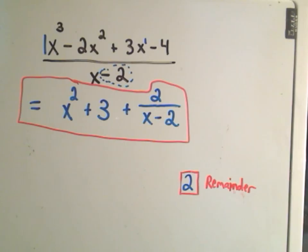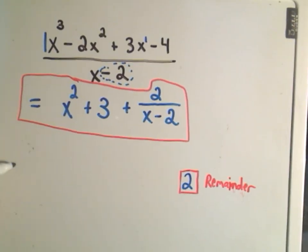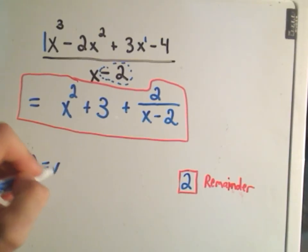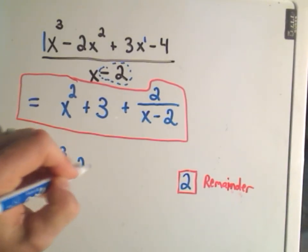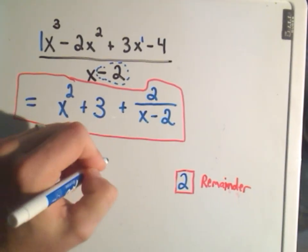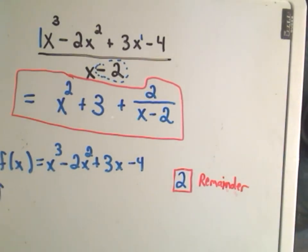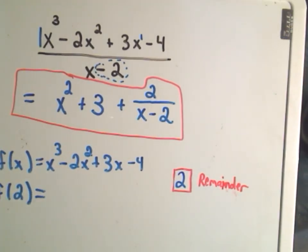Notice if we look at the thing on top, if I call that f of x. So if I say f of x equals x cubed minus 2x squared plus 3x minus 4. Suppose I wanted to evaluate this. Suppose I wanted to plug in the number 2.